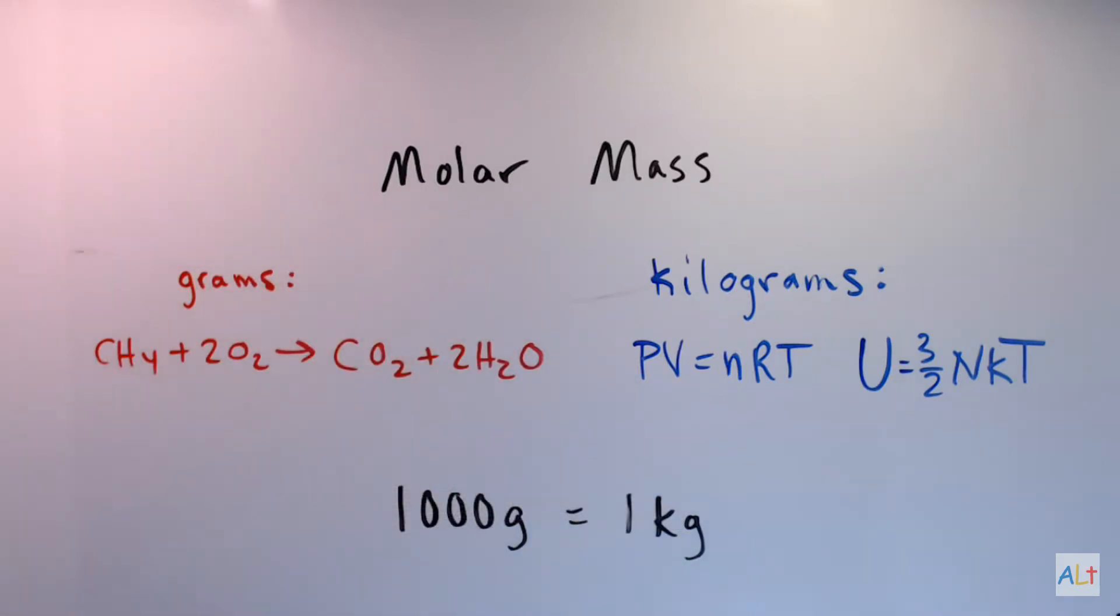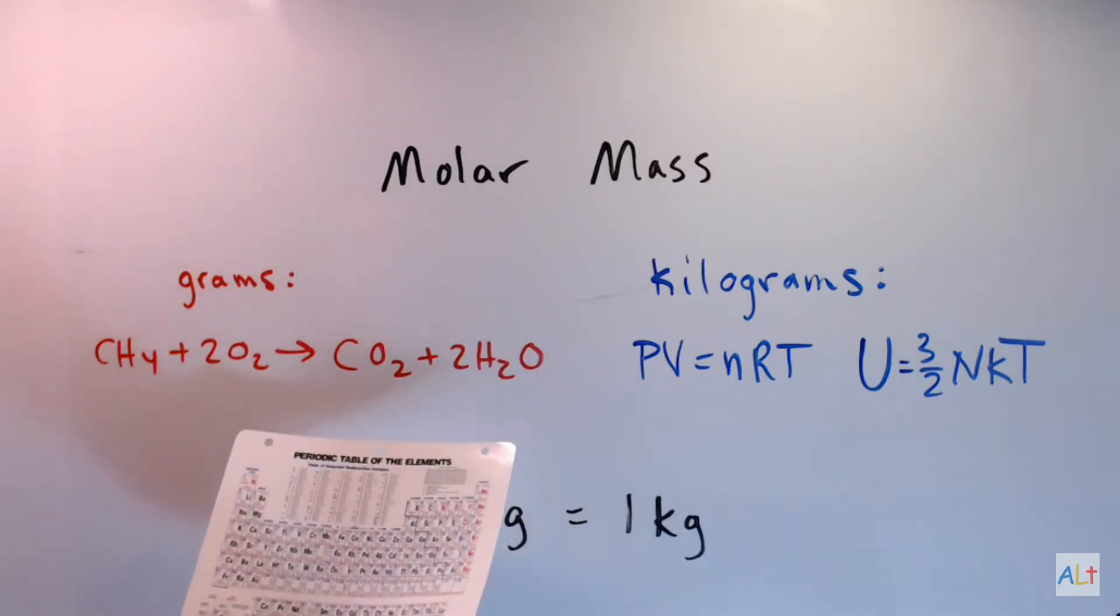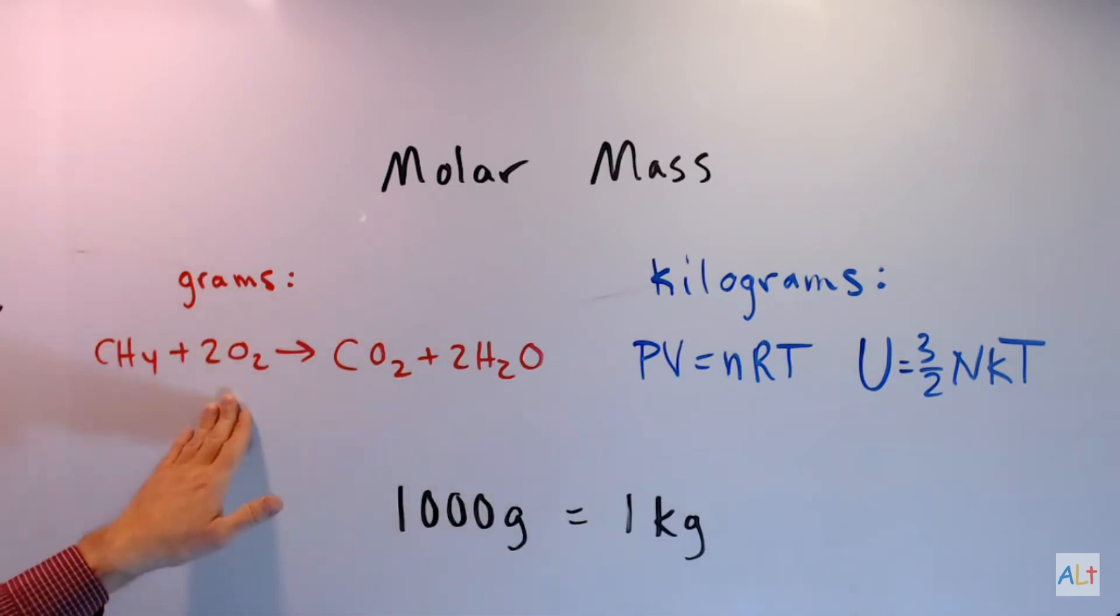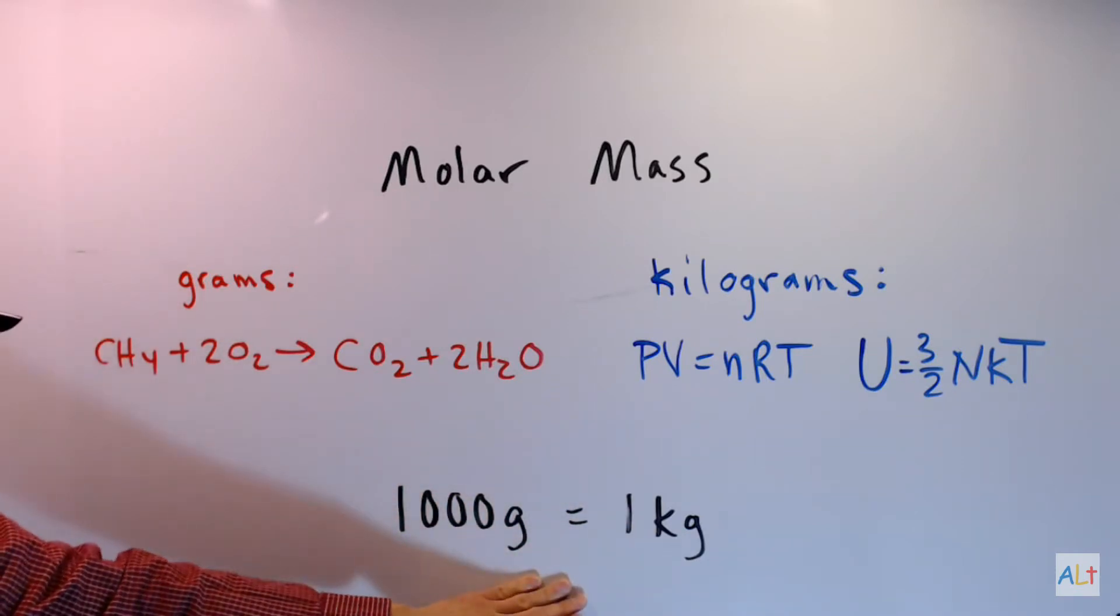Now, to find a molar mass in kilograms, you start out the same way as before. You add up the numbers to get your molar masses in grams, and then you just divide by a thousand to get kilograms. And toward the end of the video, I'll do an example of that.